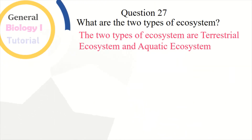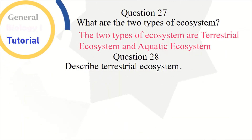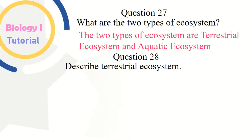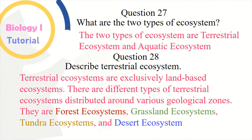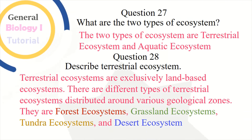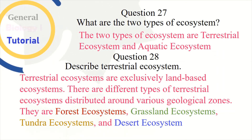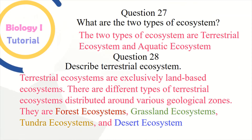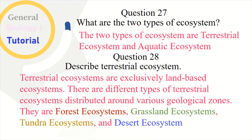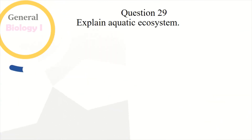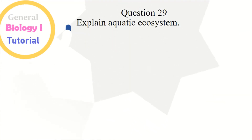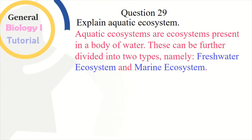Question 27: What are the two types of ecosystem? The two types of ecosystem are terrestrial ecosystem and aquatic ecosystem. Question 28: Describe terrestrial ecosystems. Terrestrial ecosystems are exclusively land-based ecosystems. There are different types of terrestrial ecosystems distributed around various geological zones: forest ecosystems, grassland ecosystems, tundra ecosystems, and desert ecosystems.